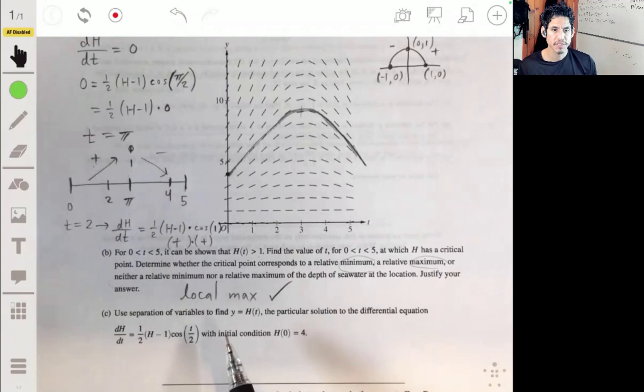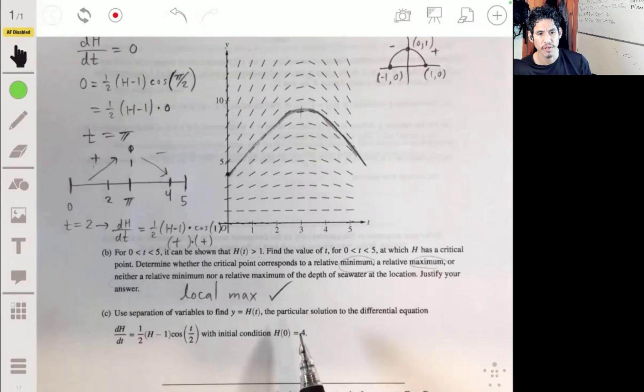And part C use separation of variables to find y equals h of t, the particular solution to the differential equation. So with the initial condition, h of zero equals four.